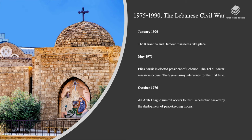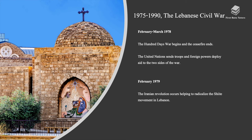In May 1976, Elias Sarkis was elected president of Lebanon. The Tel Al-Zaatar massacre occurred and the Syrian army intervened for the first time. In October 1976, an Arab League summit was held to instill a ceasefire backed by the deployment of peacekeeping troops. Between February and March 1978, the Hundred Days War began and the ceasefire ended. The United Nations sent troops and foreign powers deployed support to both sides of the war.